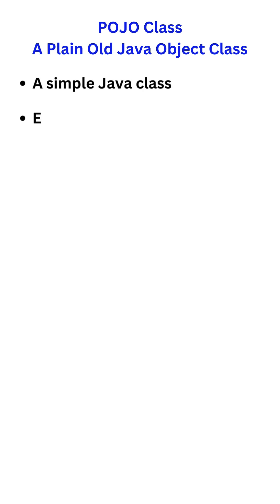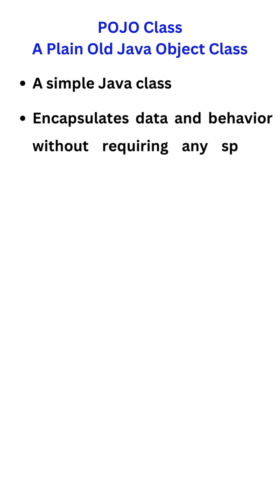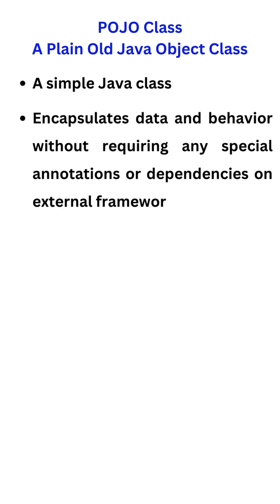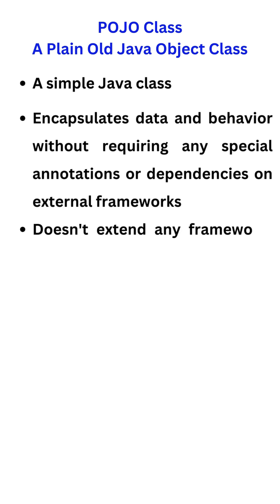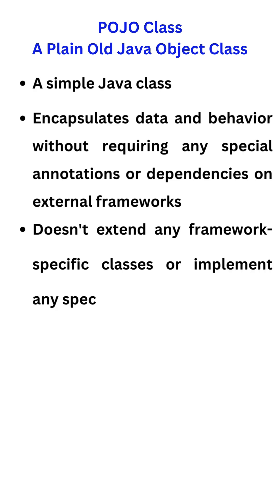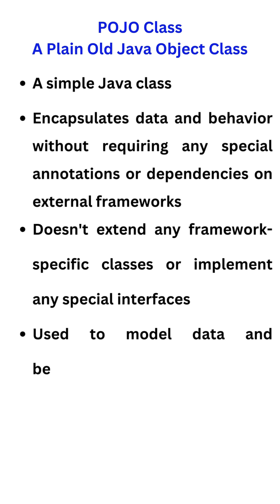A POJO class, or Plain Old Java Object, is a simple Java class that encapsulates data and behavior without requiring any special annotations or dependencies on external frameworks. It doesn't extend any framework-specific classes or implement any special interfaces, and is used to model data and behavior in a straightforward manner.